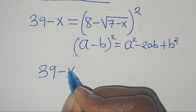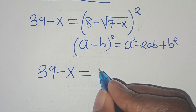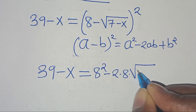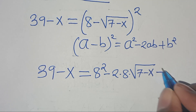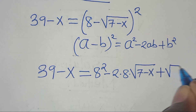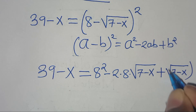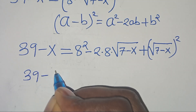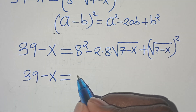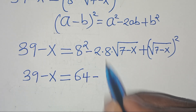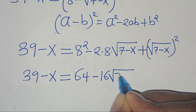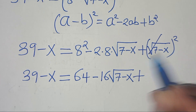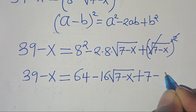Applying this algebraic identity, we get 39 minus x equals 8 squared minus 2 times 8 times the square root of 7 minus x, plus the square root of 7 minus x squared. The last term simplifies: eliminating the square root sign gives plus 7 minus x.